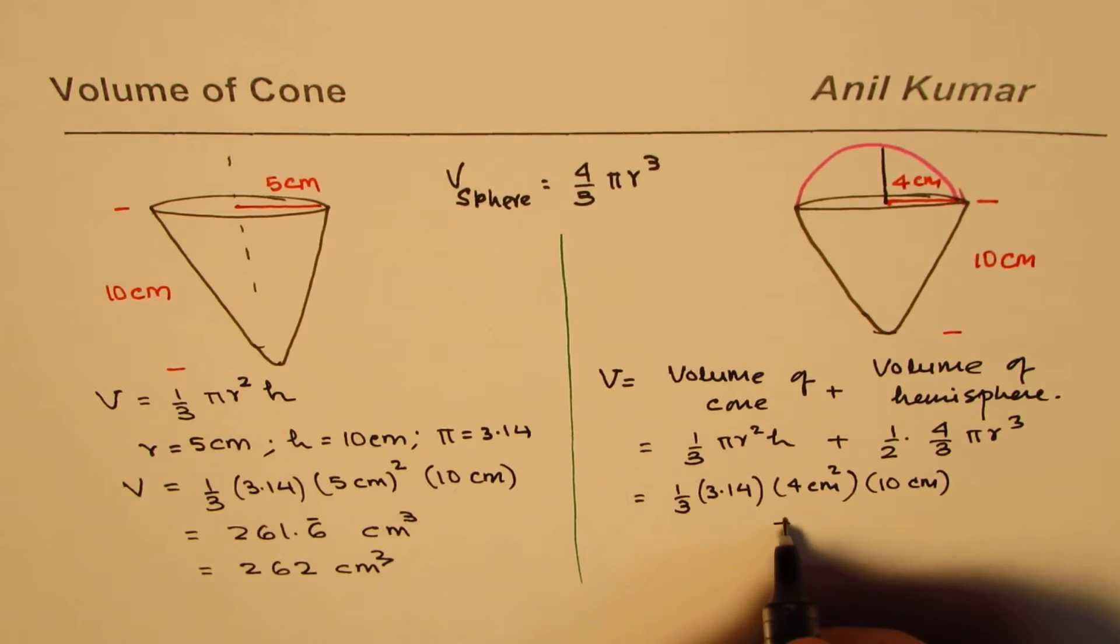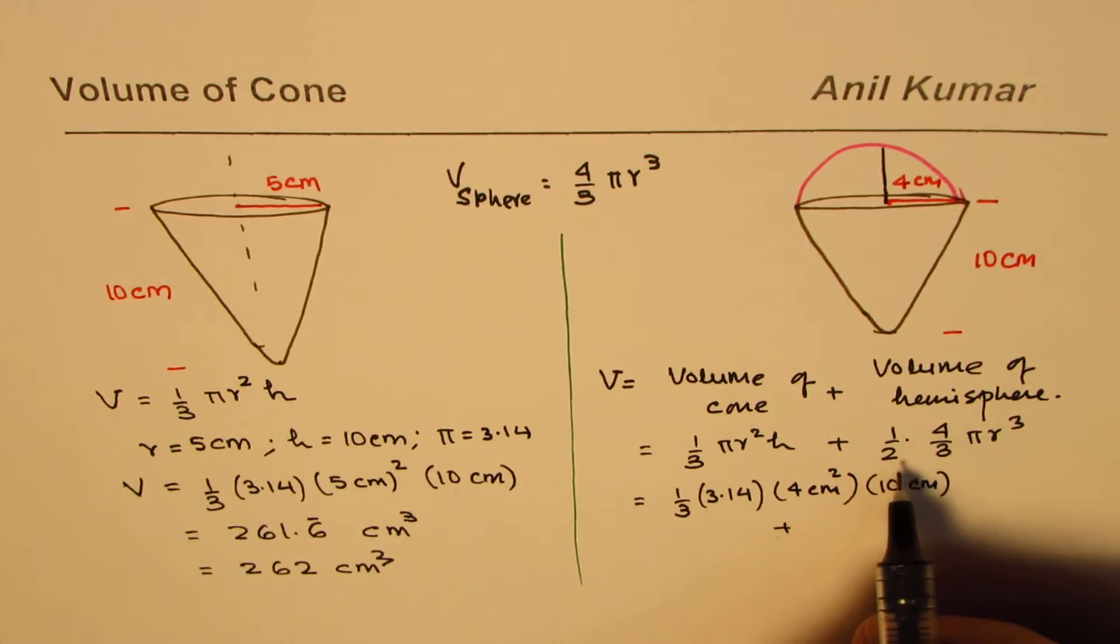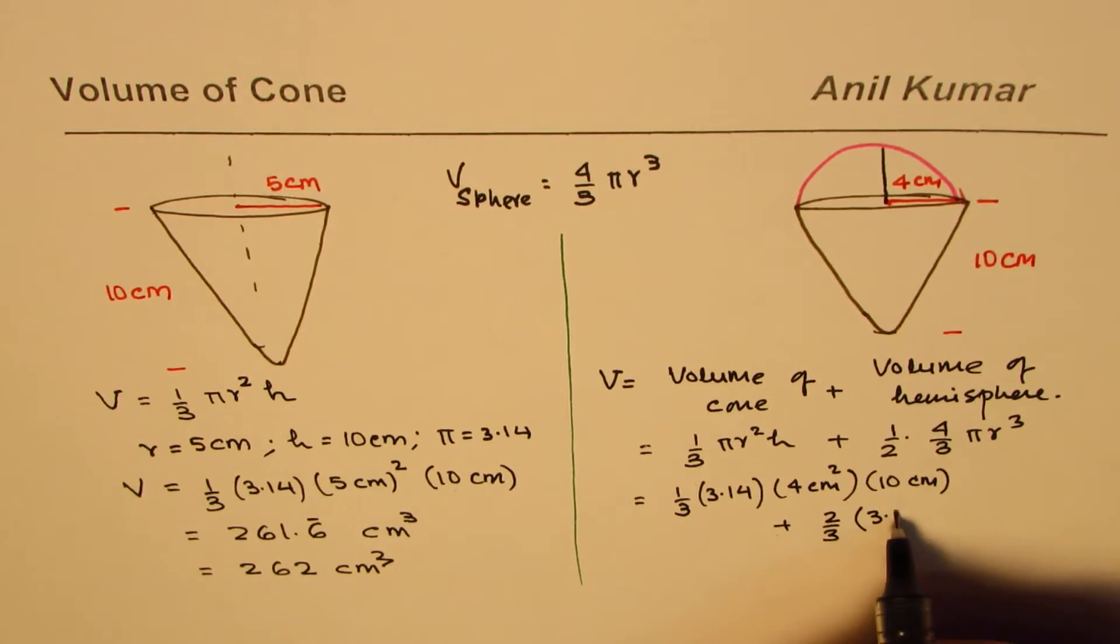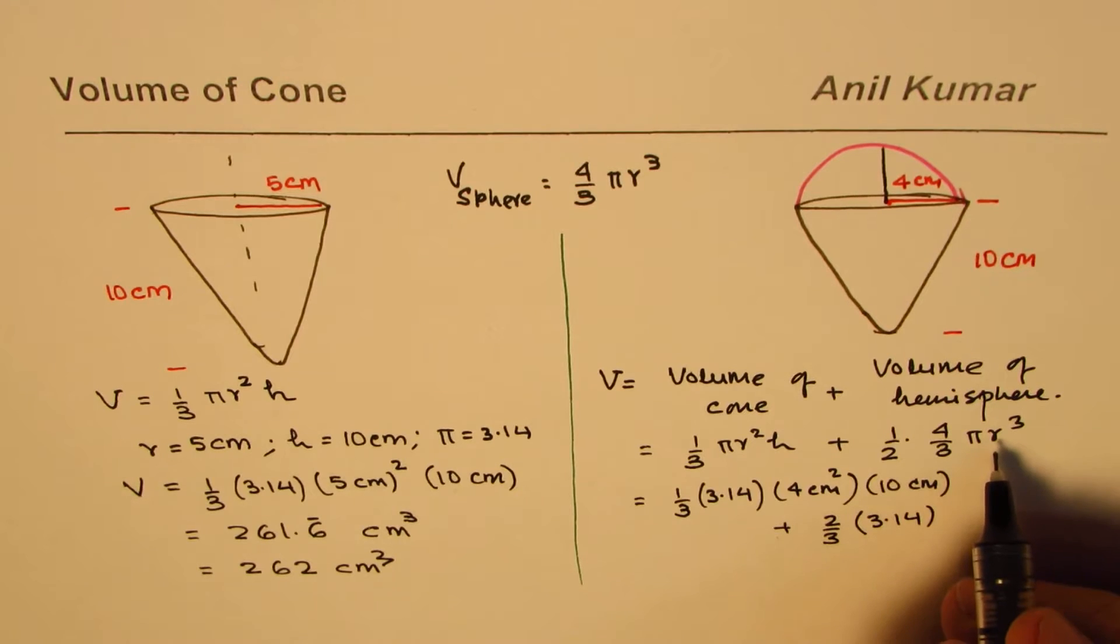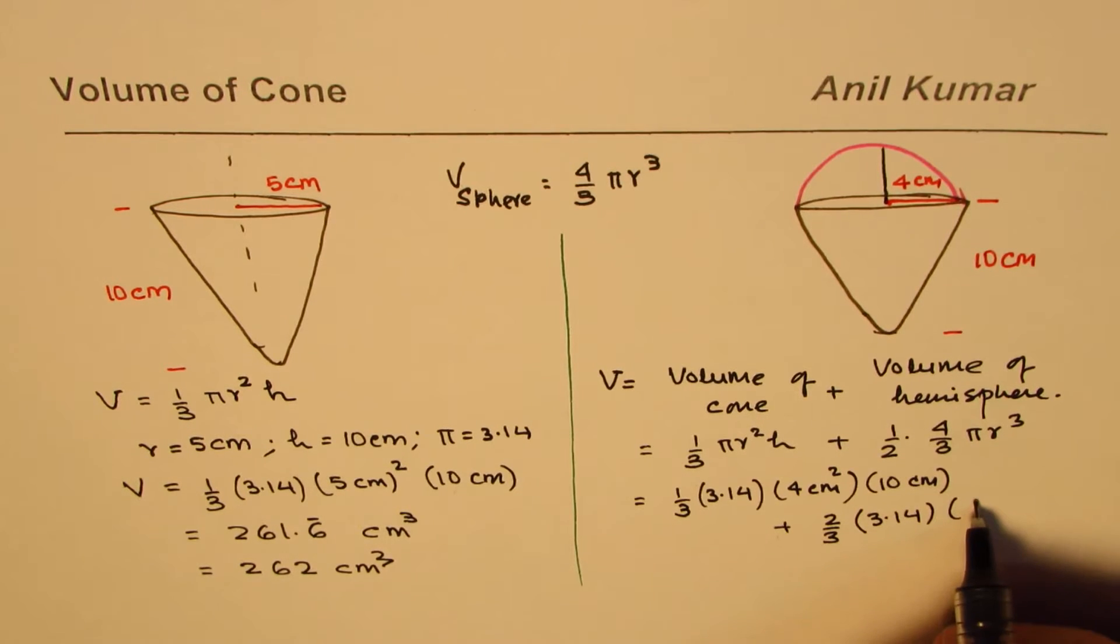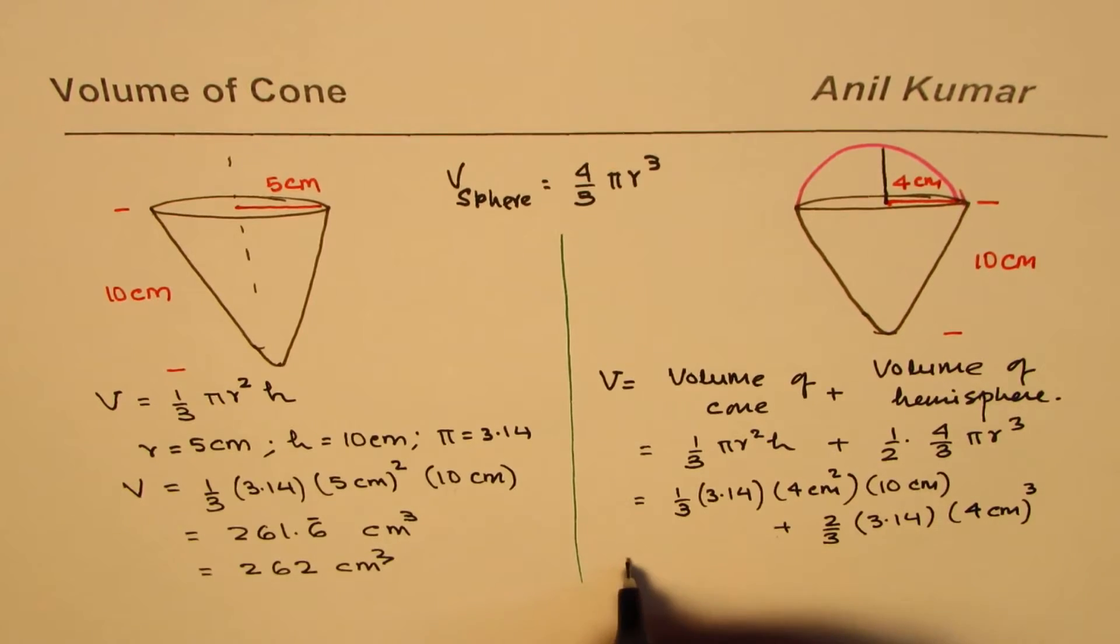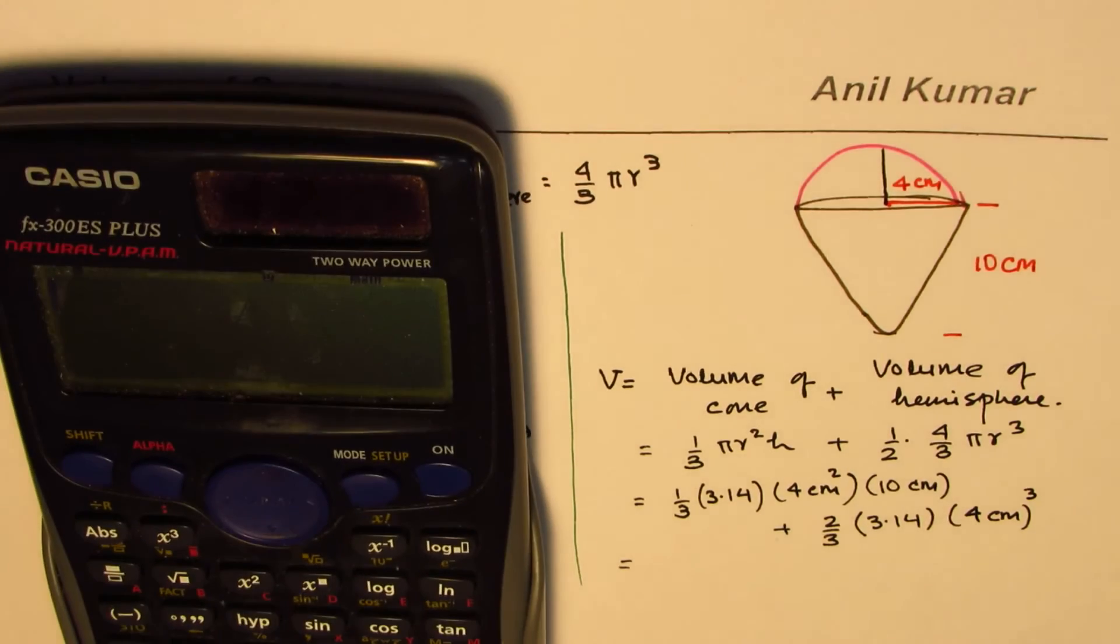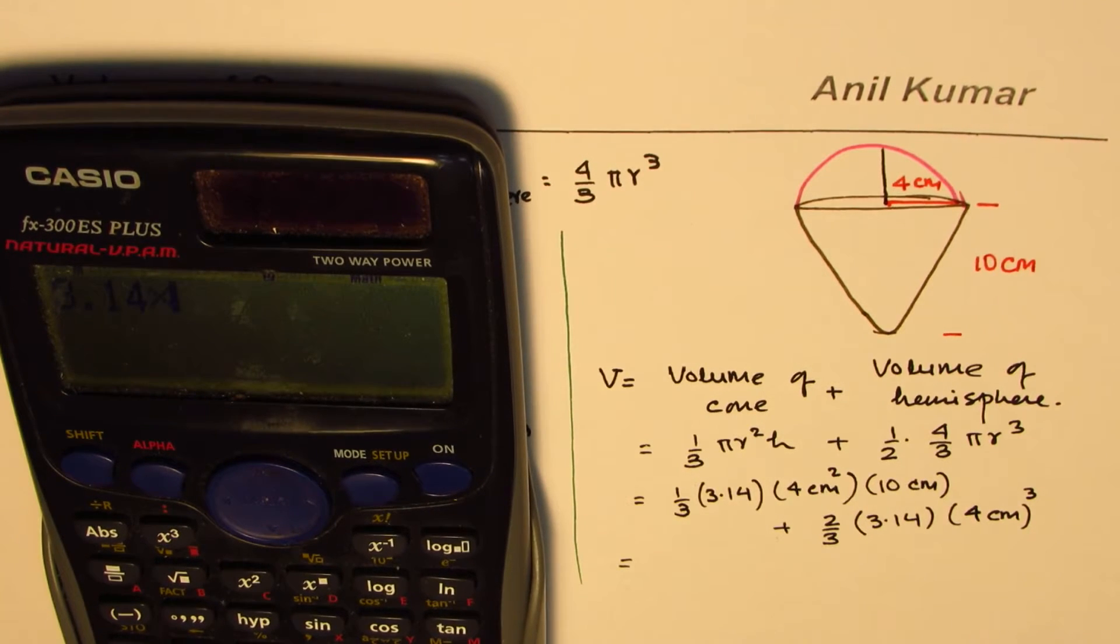Then we'll add - if you simplify this you get 2 over 3 - so write 2 over 3, 3.14, r is 4 centimeters so we write 4 centimeter cube. Let's use calculator to calculate this value. It is 3.14 times 4 square.